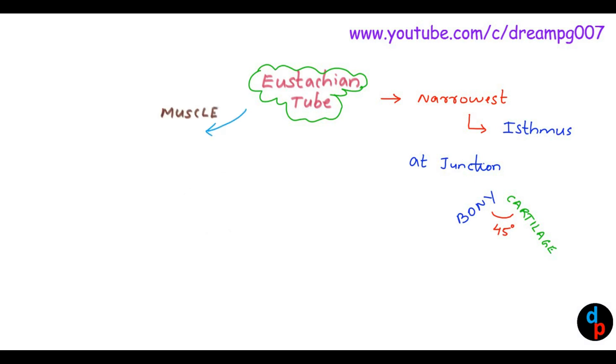Let's have a look into what are the muscles seen in the Eustachian tube. The main muscle seen in the Eustachian tube is tensor palati. Other muscles are levator palati and salpingopharyngeus.